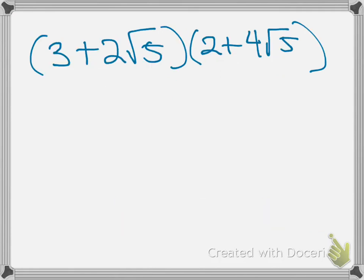Example time. So here are two binomial radical expressions and we want to multiply them together. Hopefully a little bell is going off in your head and it's telling you that we are going to FOIL, which is exactly what we need to start doing.